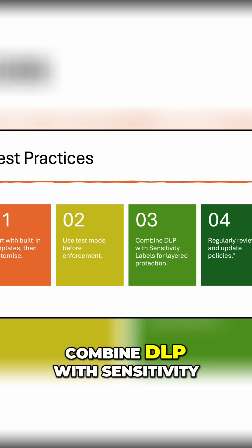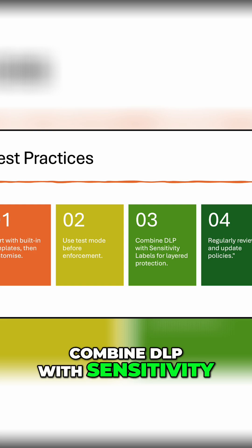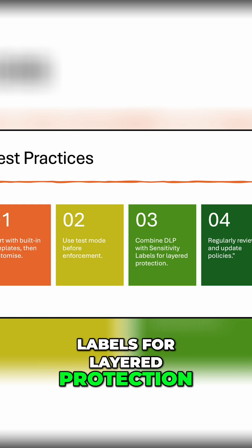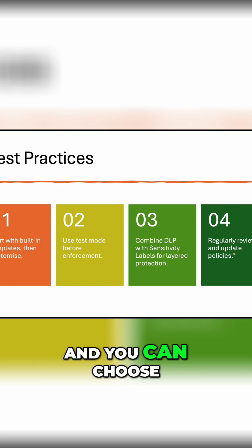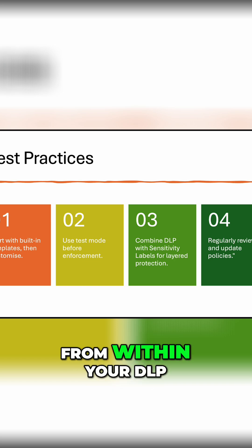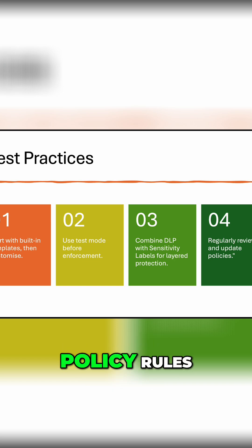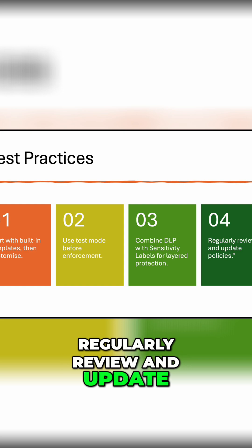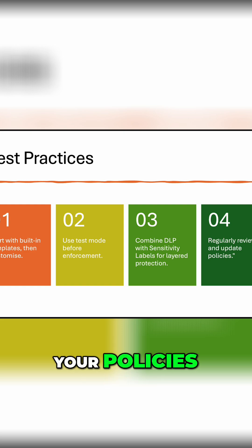Three, combine DLP with sensitivity labels for layered protection. And you can choose to apply sensitivity labels from within your DLP policy rules. And number four, regularly review and update your policies.